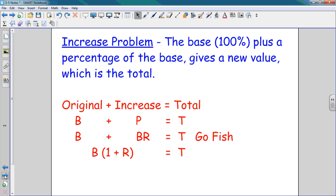My original is that B plus my P, which is the part or percentage of that base, equals the total. Here I took the percentage of the base and plugged it in for P. Remember, P equals B times R. So I have B plus B times R equals T. Then I'm going to go fish.